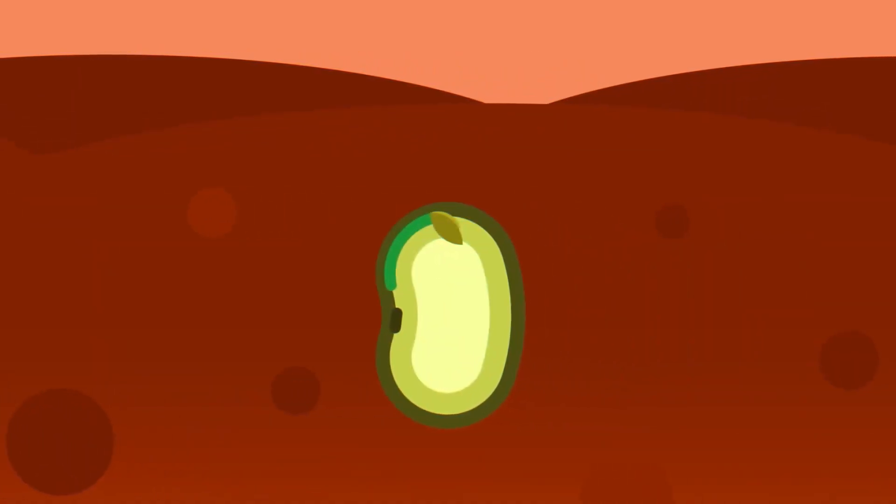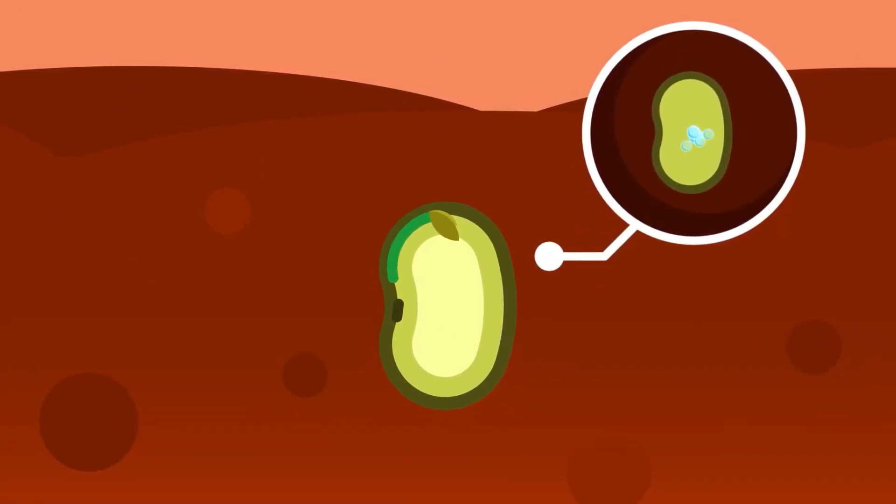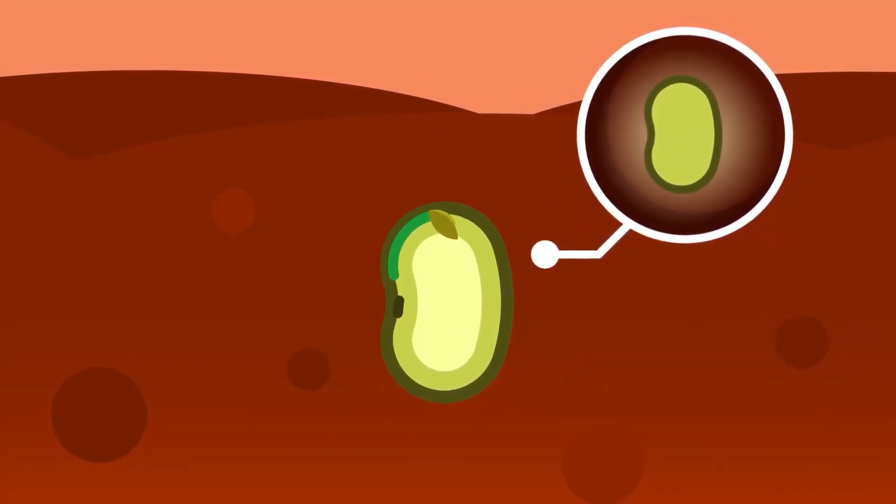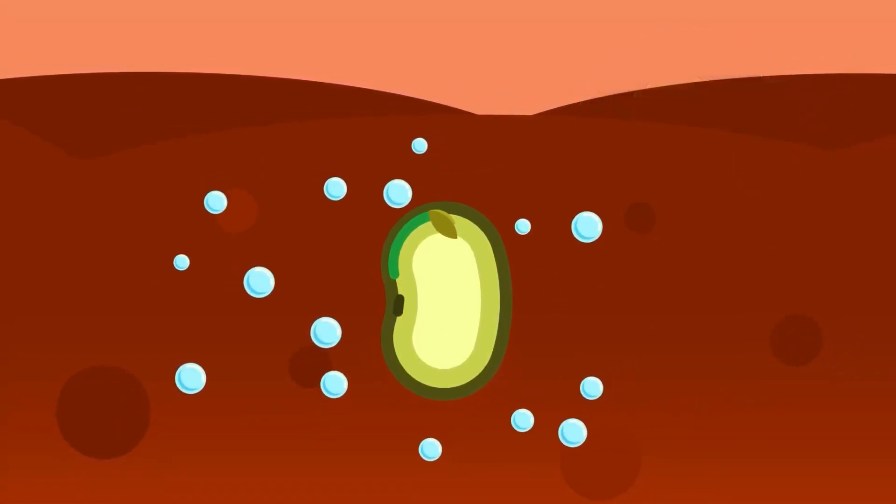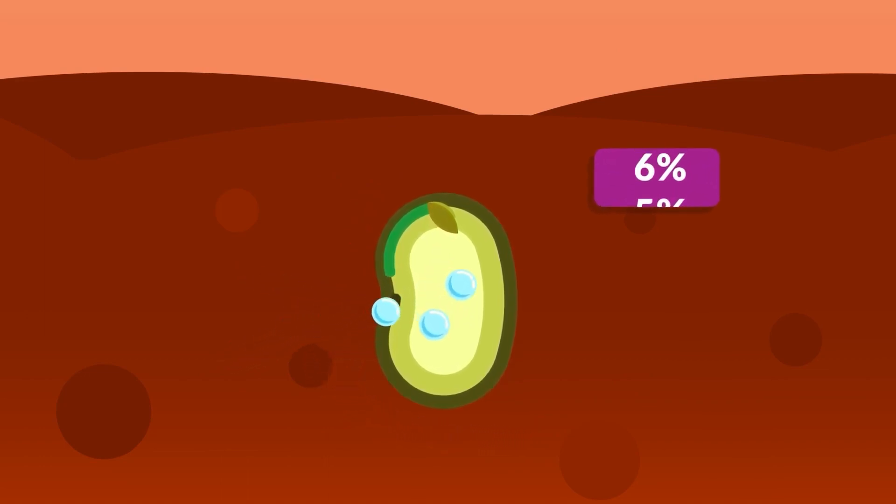Stages of germination: There are three main stages of germination: the imbibition of water, increased metabolic activity, and swelling of cells. First, water is imbibed into the seed. The 5-10% moisture level inside the seed then increases cellular respiration.